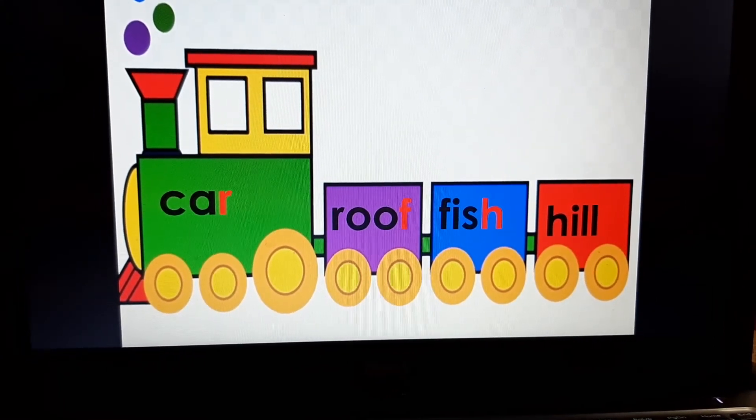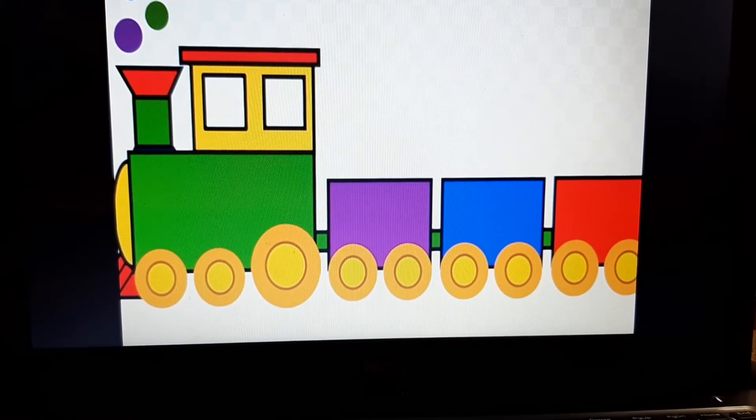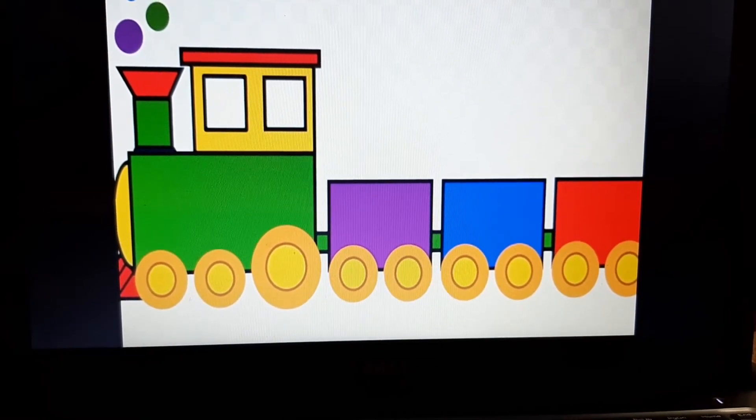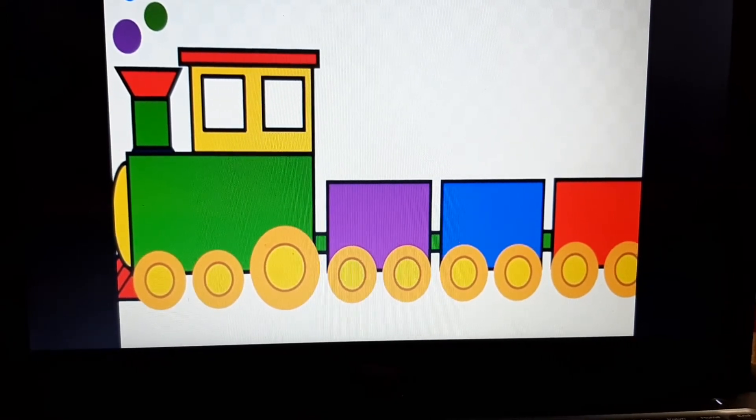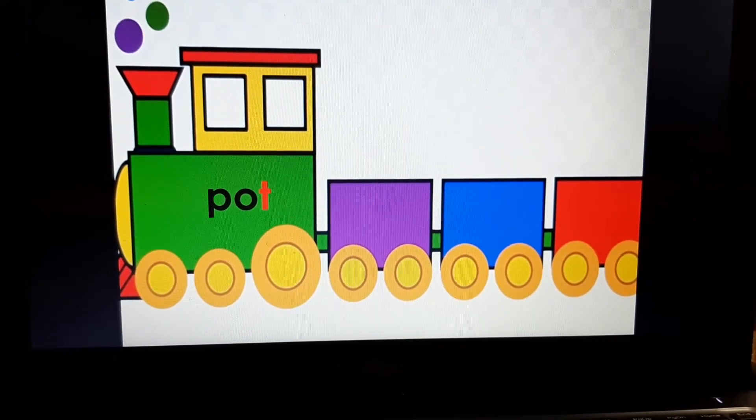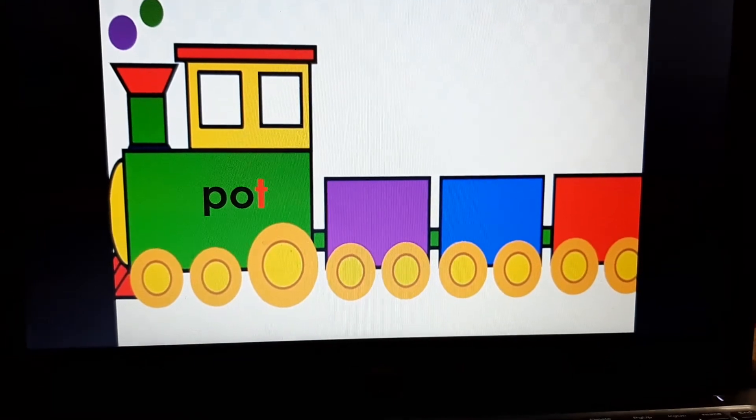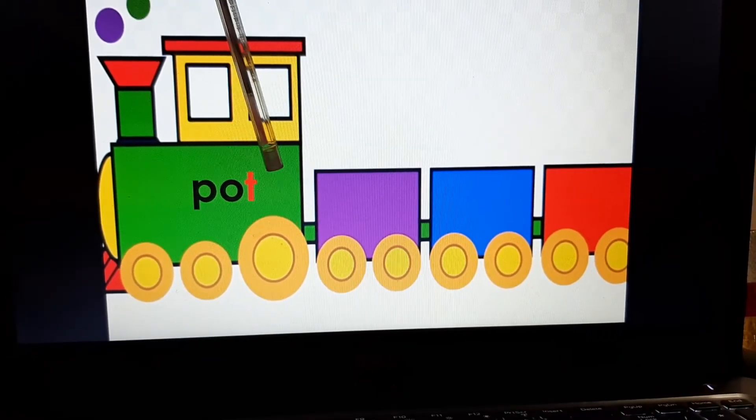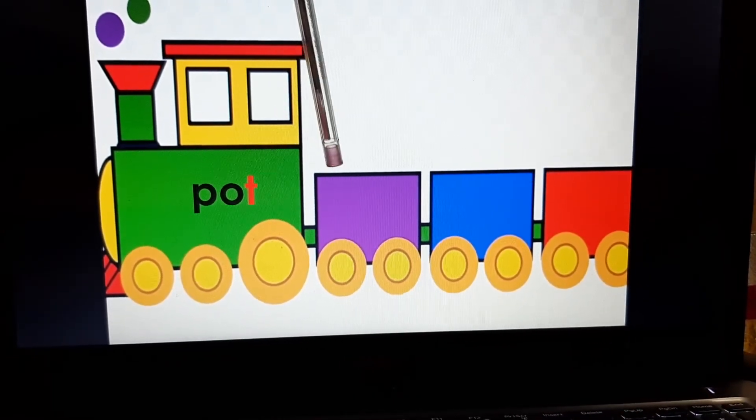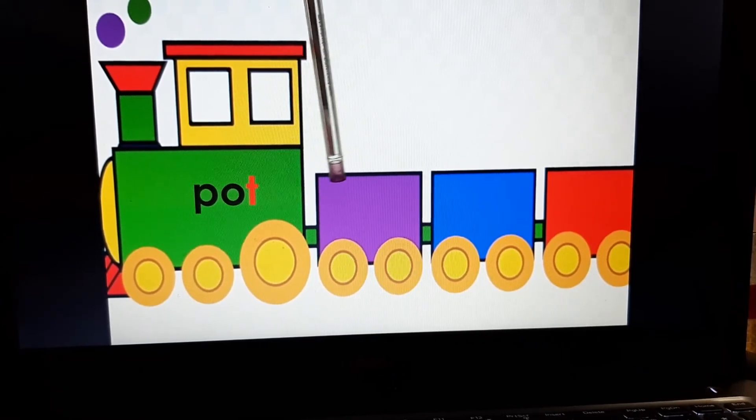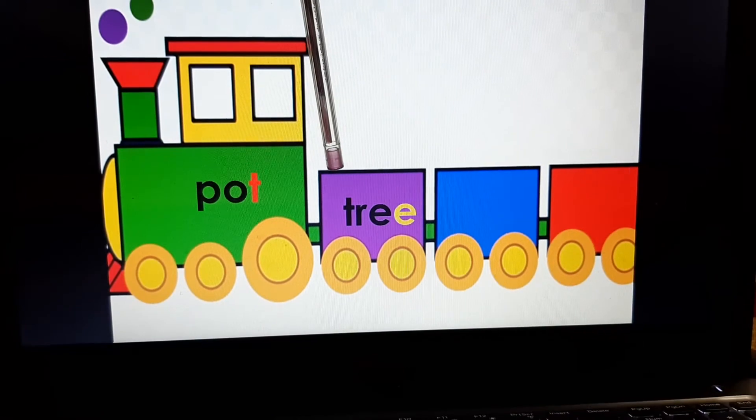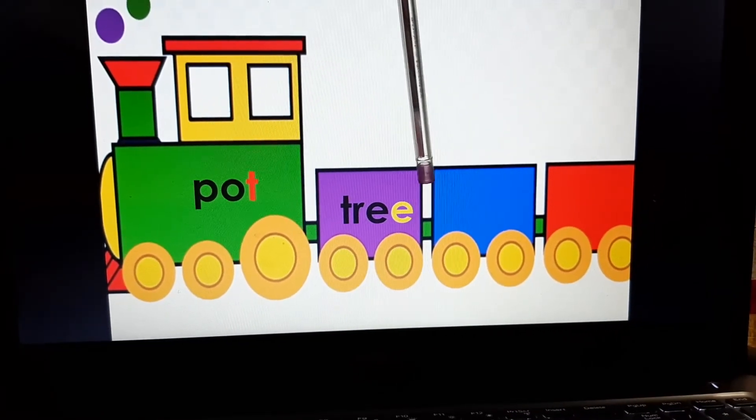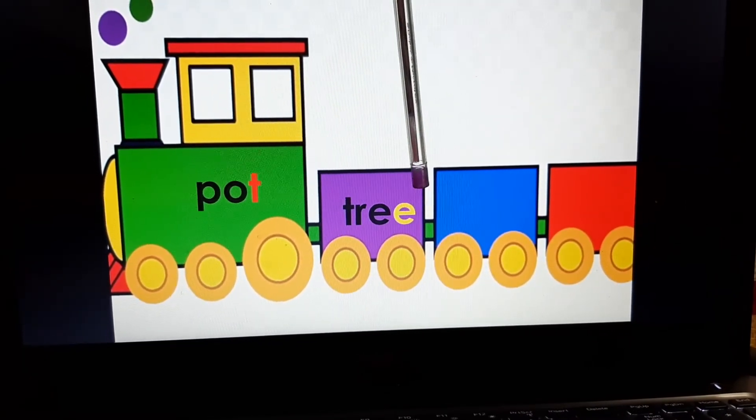Now let's move on to the next train. See, this is our next word train. And let's see which word is there. The first letter is pot. P-O-T, pot. Now the last letter will become the first letter. So we will start a word with letter T. Tree.